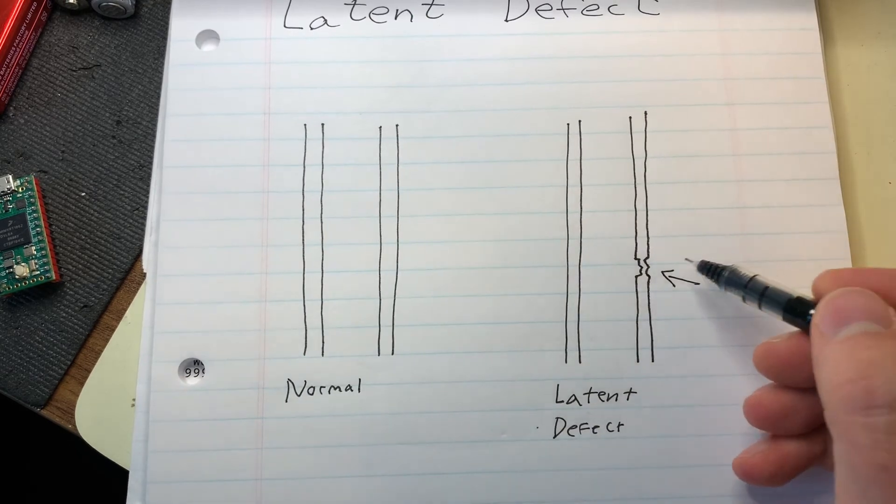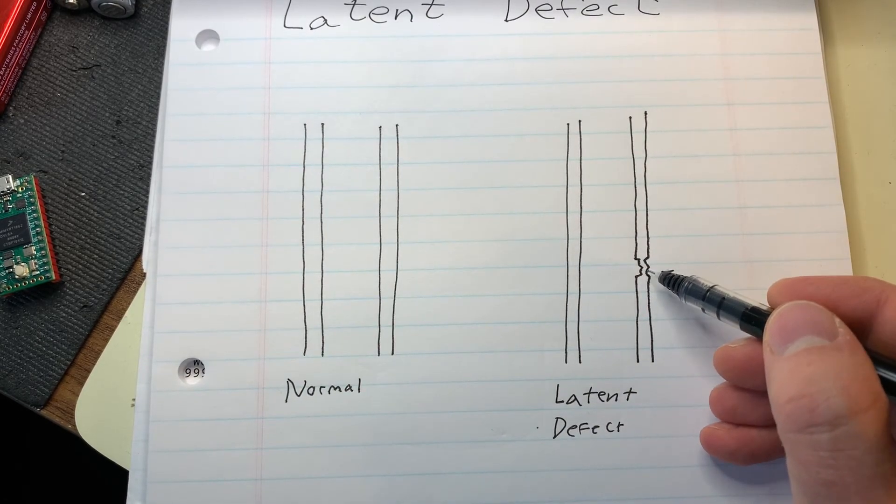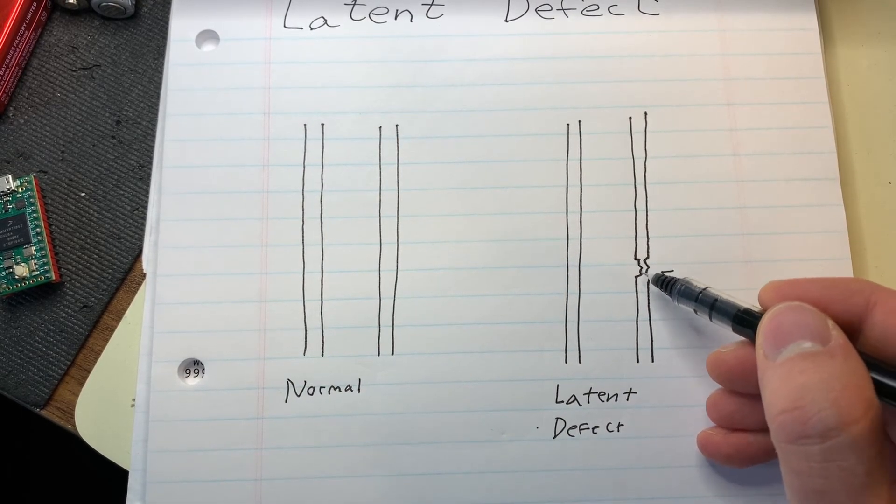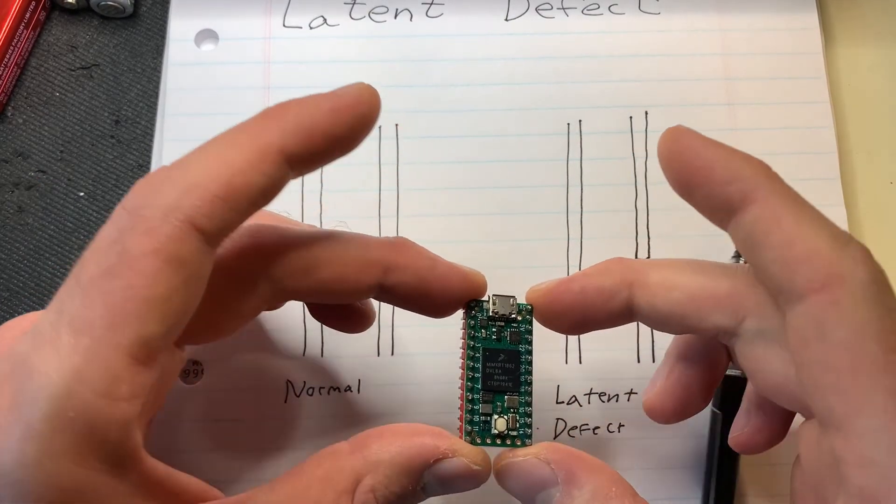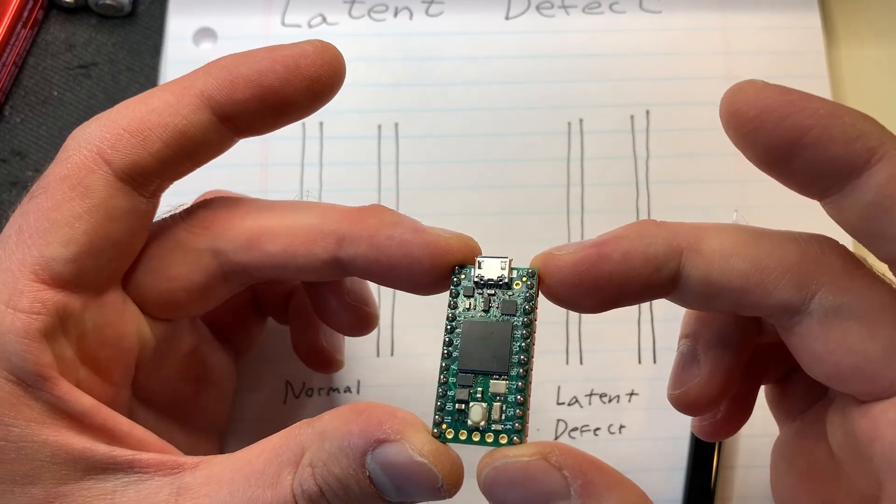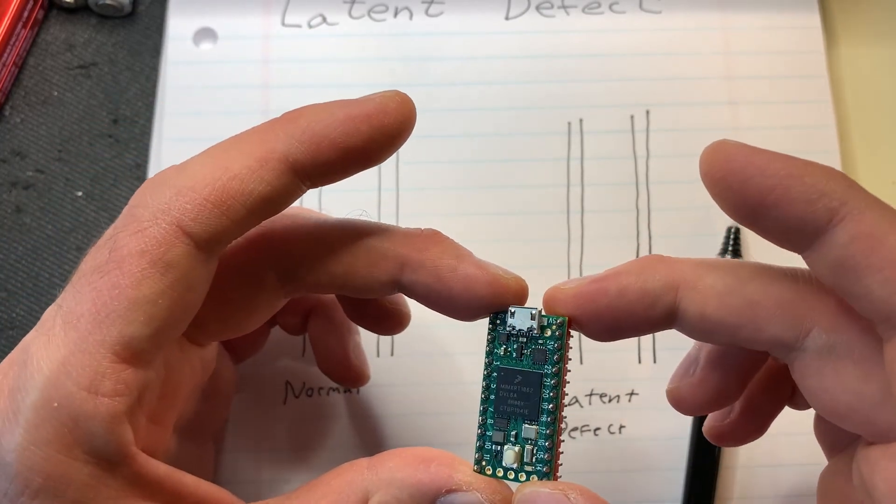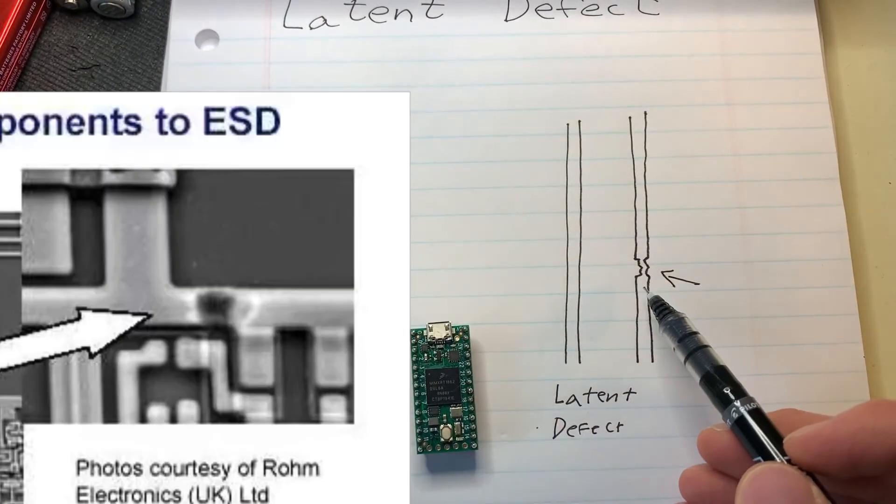Because if you see here, even though there's a lot of damage to this trace, there's still enough of it there that it may still operate perfectly fine. So if you're evaluating a board like this, you may run it through its tests and it may work fine without ever realizing that there is a pretty massive amount of damage inside of here.